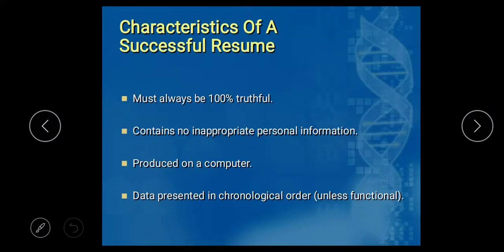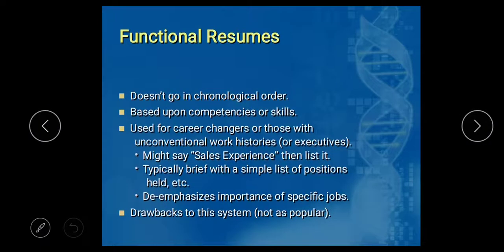A successful resume must always be 100% truthful. It contains no inappropriate personal information and is produced on a computer. Data is presented in chronological order. In a chronological resume, the most recently completed things are mentioned first, and past items follow. This is a key difference from the functional resume type, which we will study in more detail.